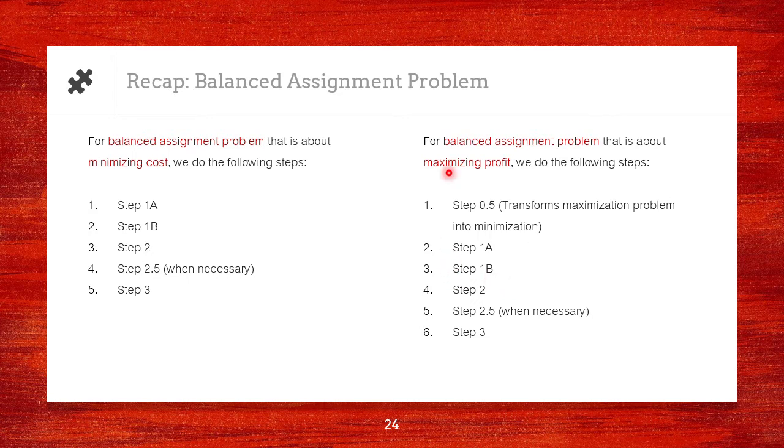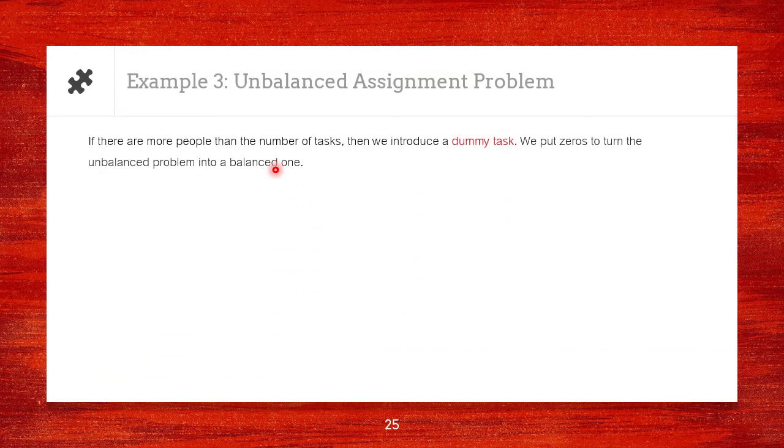Now, what about if the problem is not balanced? For example, if there are more people than the number of tasks, what we do is we introduce a dummy task. We put zeros to turn the unbalanced problem into a balanced problem.